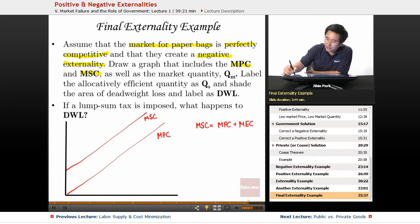Draw a graph that includes MPC and MSC as well as the market quantity Qm. Now how do you find the Qm? You've got to have the marginal social benefit, so the marginal social benefit here...